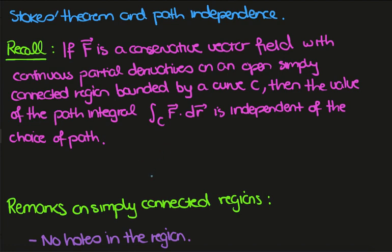Recall that if we have a conservative vector field F, which has continuous partial derivatives on a simply connected open region bounded by some curve C, then we know that the value of this path integral is independent of the specific choice of the path C.